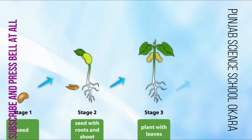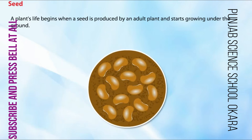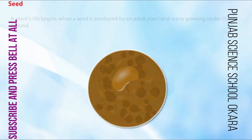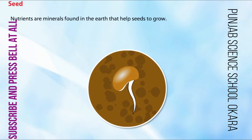There are four main stages in the life cycle of a plant. A plant's life begins when a seed is produced by an adult plant and starts growing under the ground. The seed needs water and nutrients to grow shoots. It receives water and nutrients from the earth. Nutrients are minerals found in the earth that help seeds to grow.